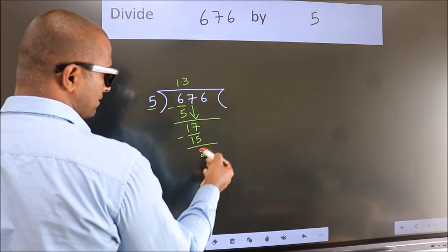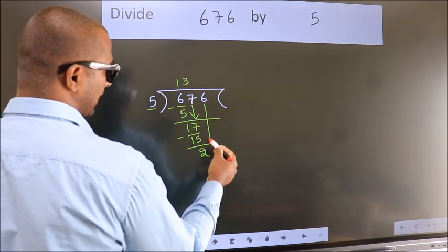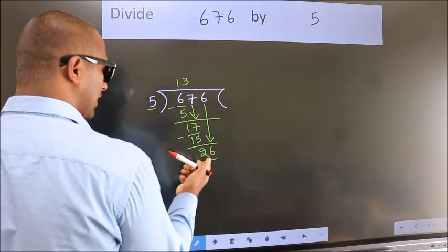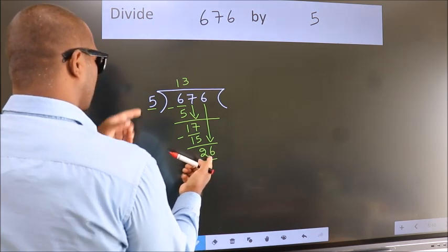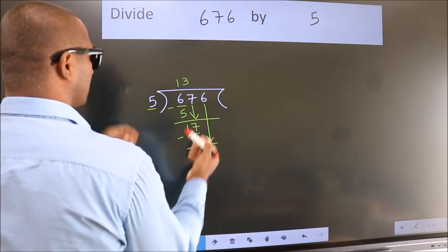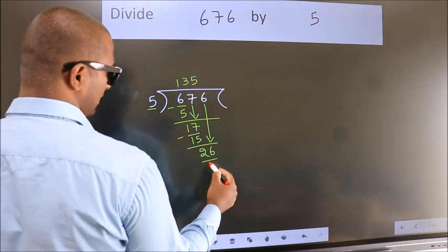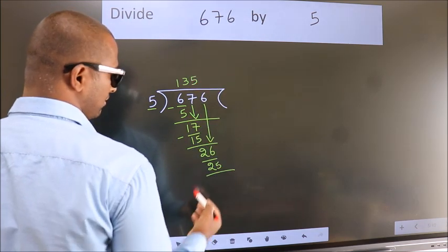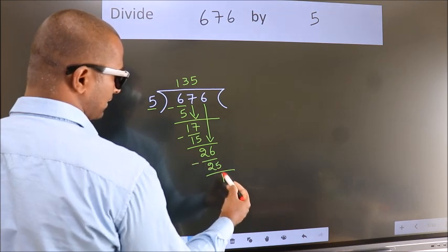After this, bring down the beside number. So 6 down. So 26. A number close to 26 in the 5 table is 5 fives 25. Now we subtract. We get 1.